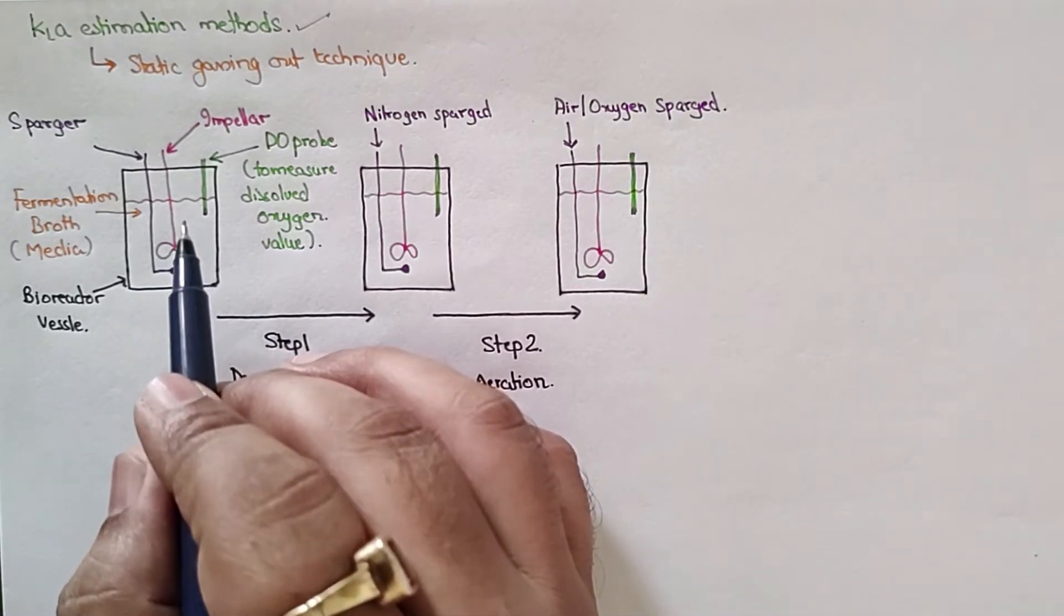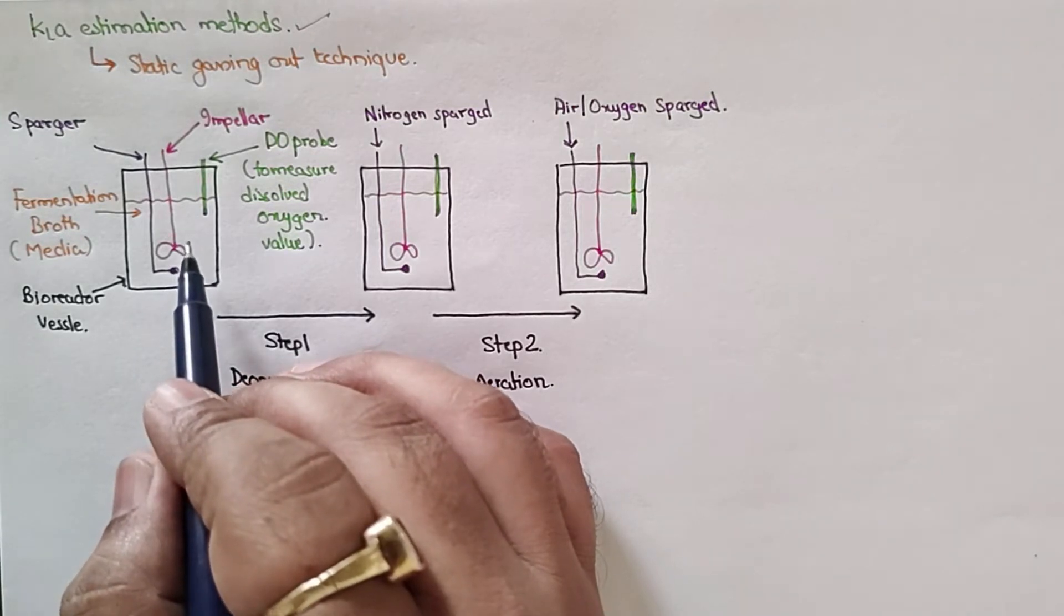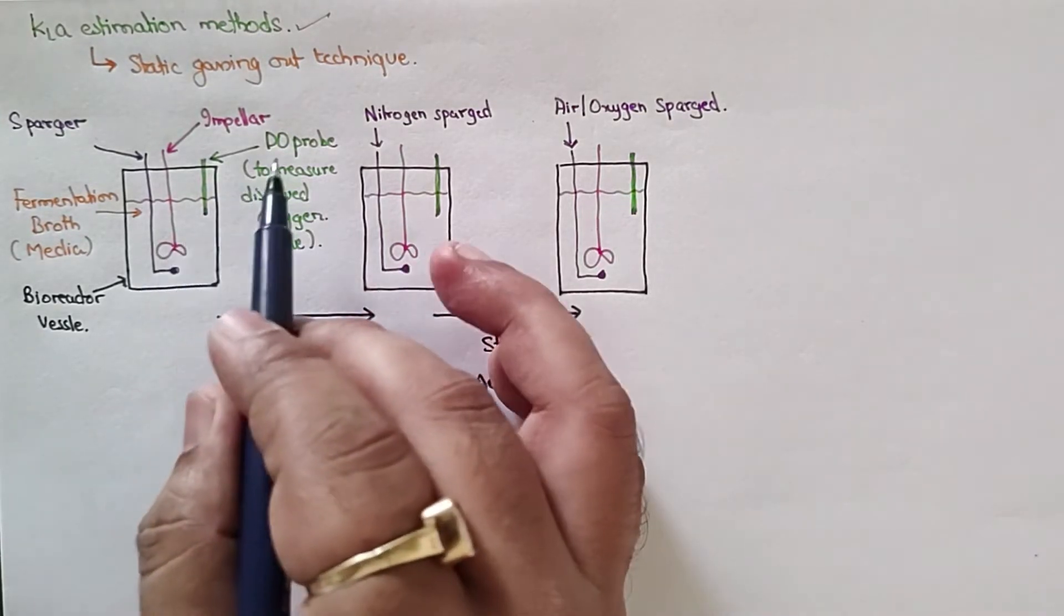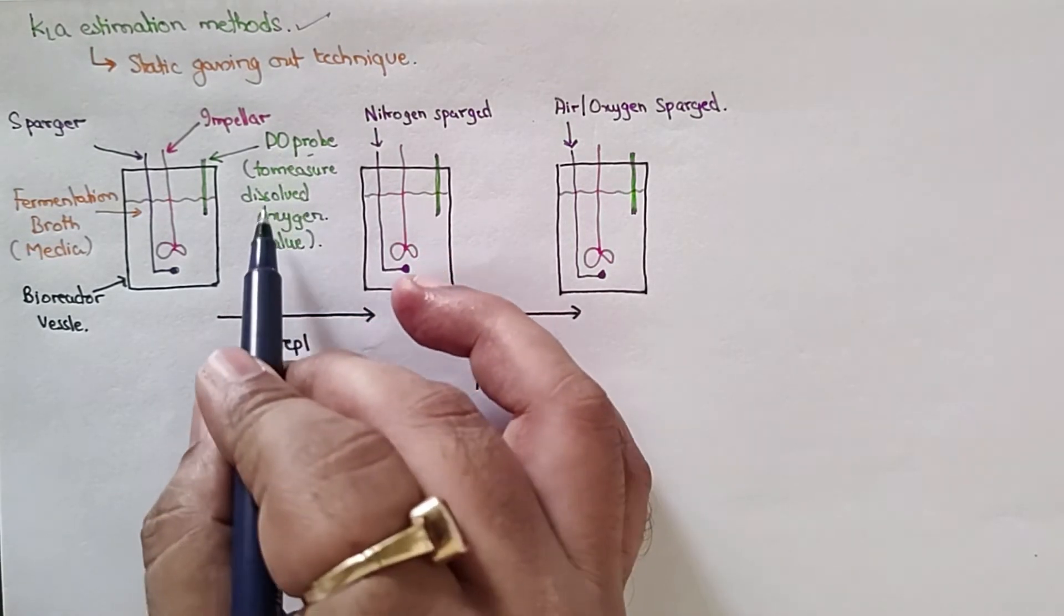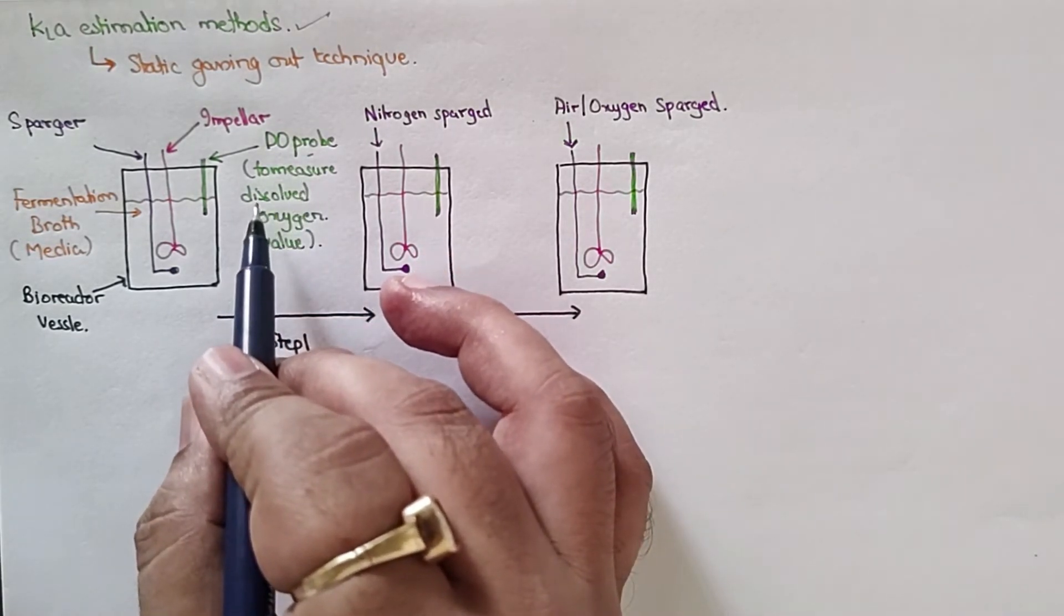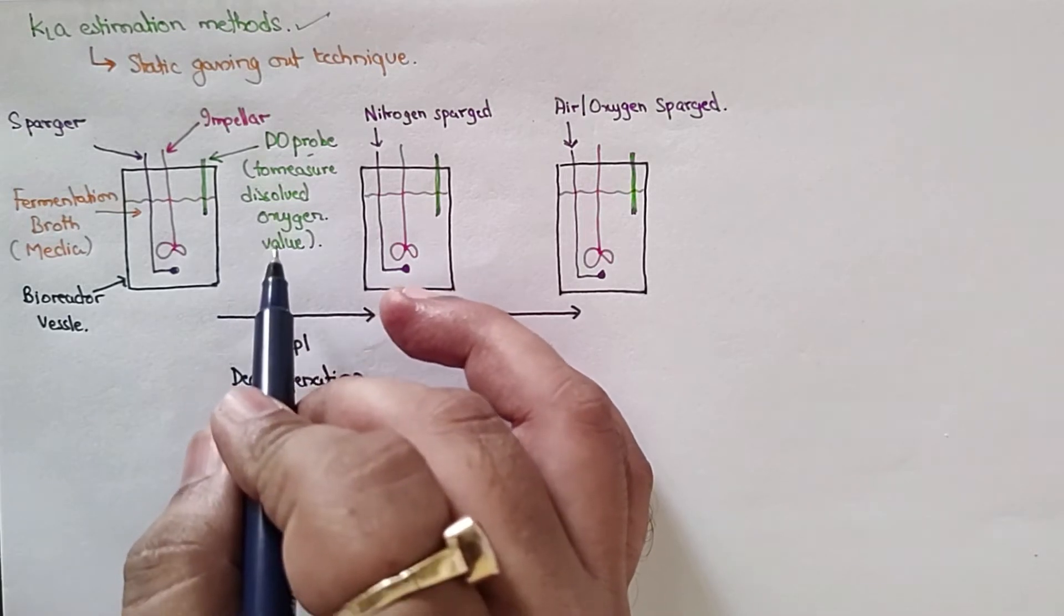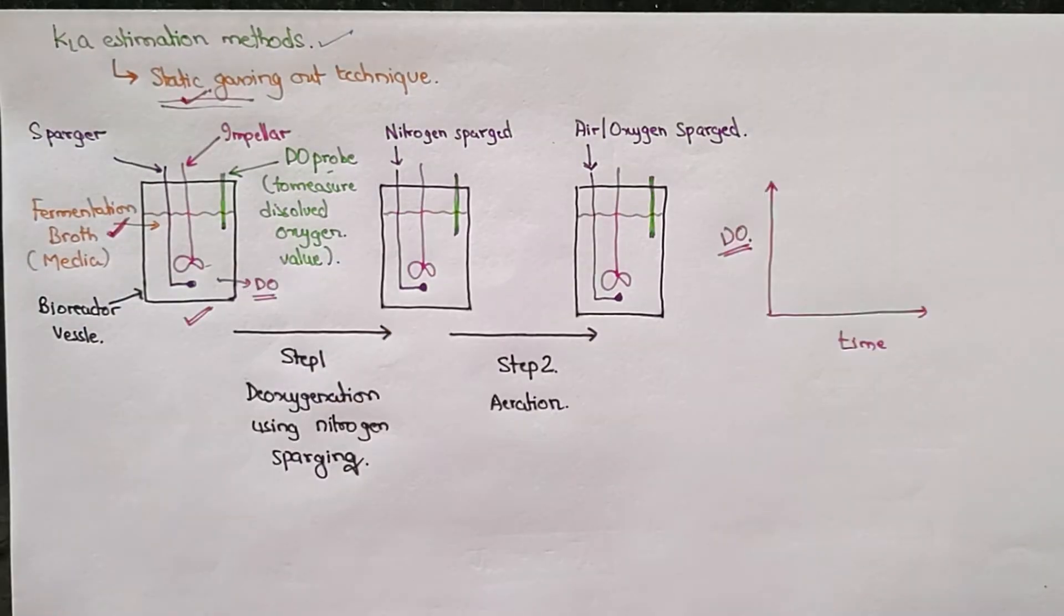Within the fermentation media, we also have a DO probe—this is a dissolved oxygen probe. We will be measuring the oxygen concentration using this DO probe itself. Let's understand what we exactly do in this method.